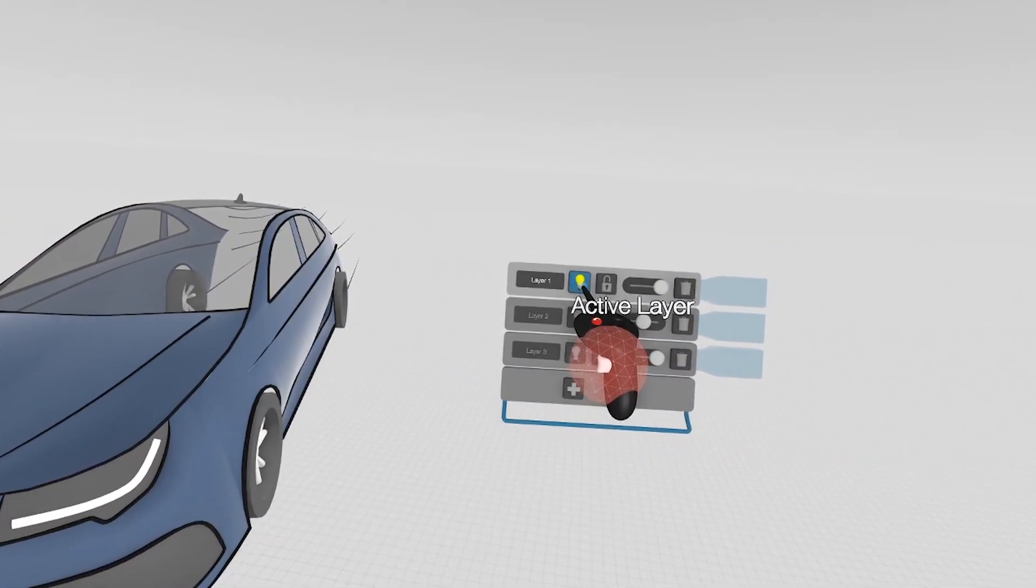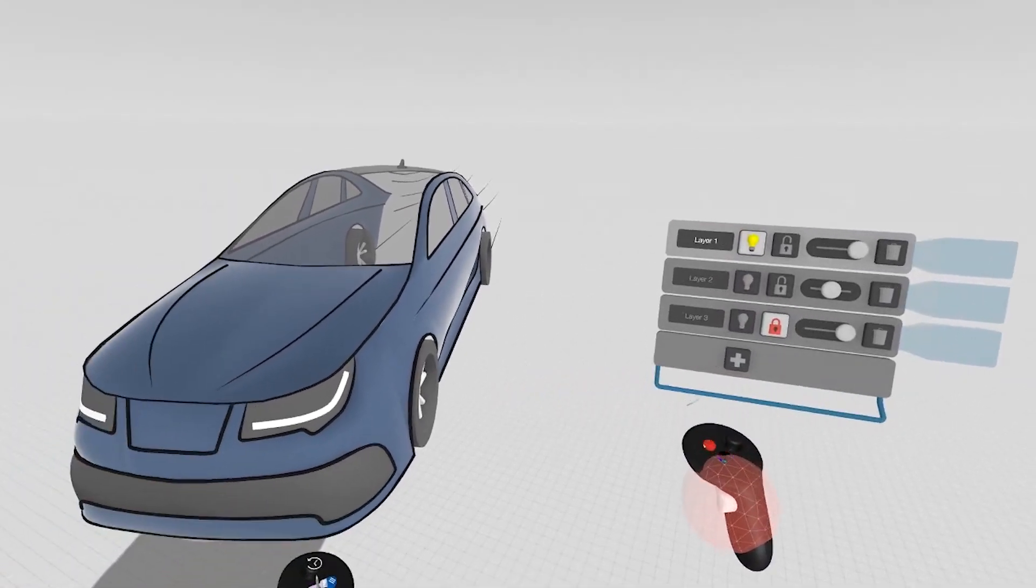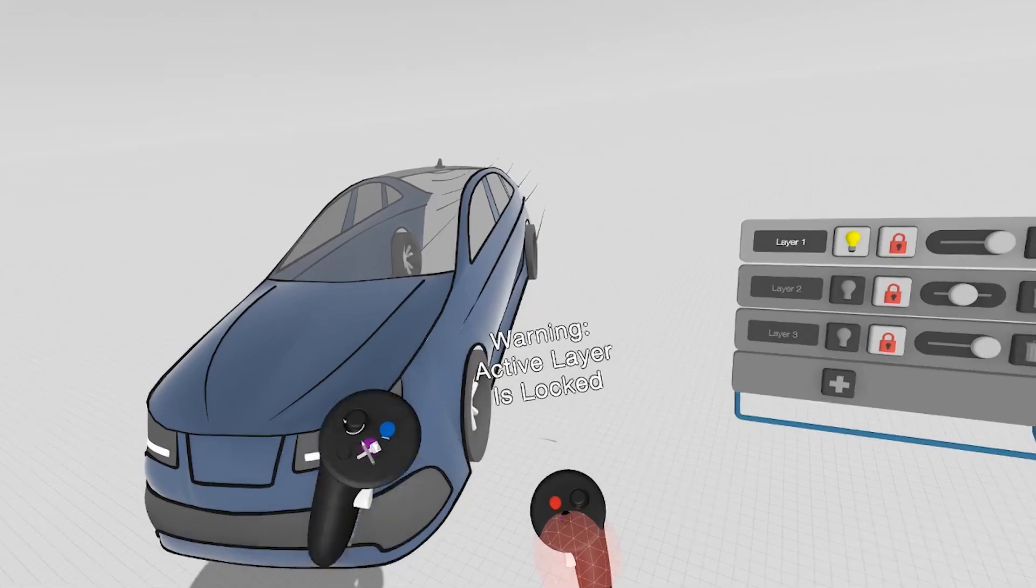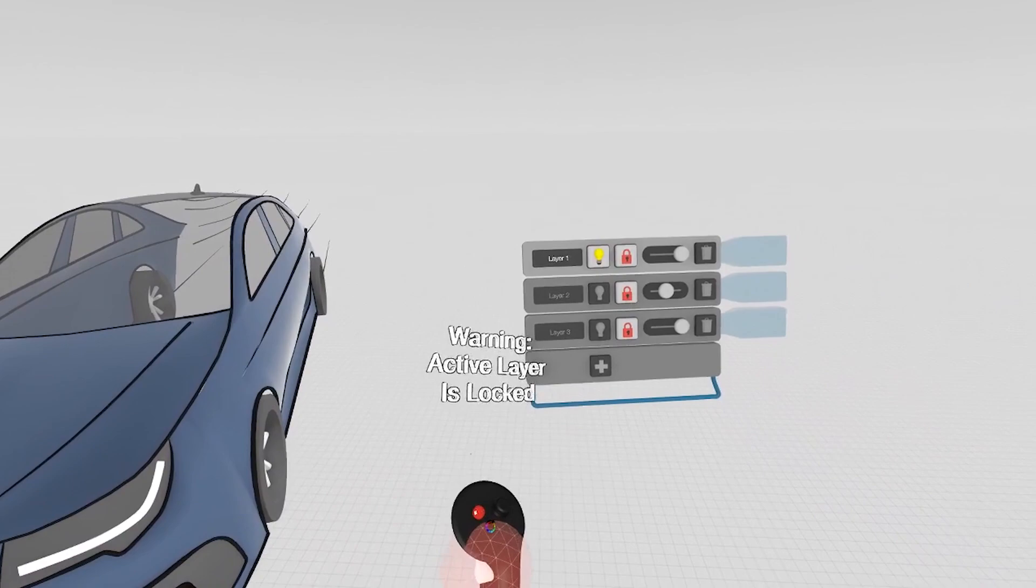The light bulb relates to the active layer. You can also lock layers, so if I lock all of the layers, there's nothing I can grab in the scene. I also end up with a warning that tells me that I have no activated layers to sketch on.